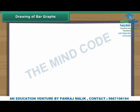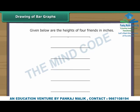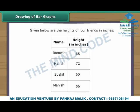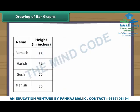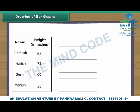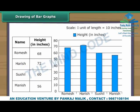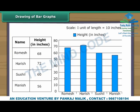Drawing of bar graphs. Let us draw a bar graph with the help of the given data. As the heights are concentrated near 60, we measure 10 inches per unit of length. Now let us draw vertical bars. The height of the bars is decided by the heights of the boys in inches — the taller the boys, the taller the bars.